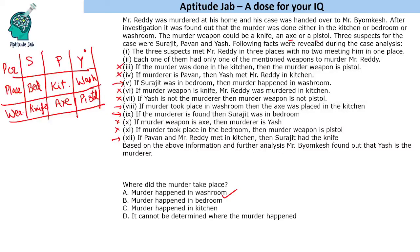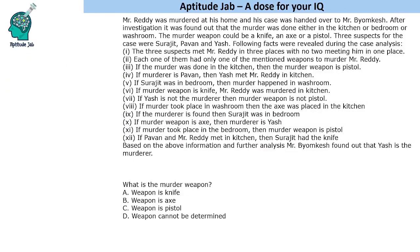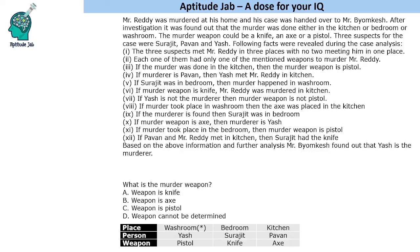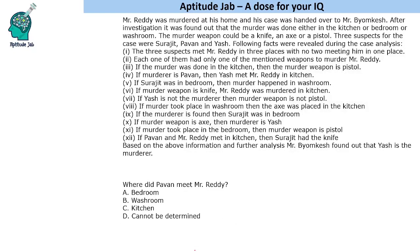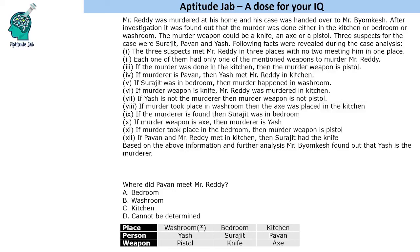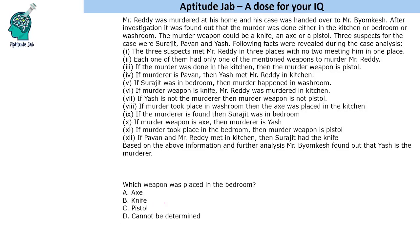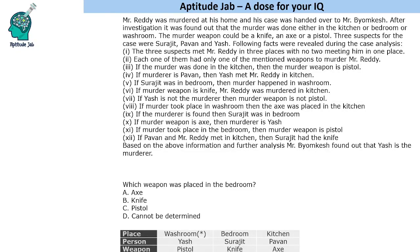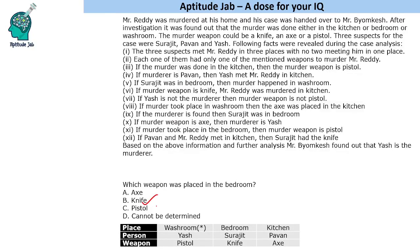Now we can answer the questions. Where did the murder take place? In the washroom. What is the murder weapon? The murder weapon is the pistol. Murder happened in the washroom, Yash was the murderer, and the weapon was pistol. Where did Pavan meet Mr. Reddy? Pavan met Mr. Reddy in the kitchen. Which weapon was placed in the bedroom? The knife was placed in the bedroom. That is the solution to this set.